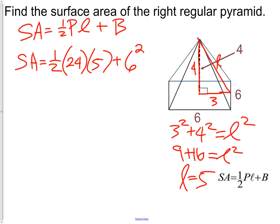Now we just got to calculate our numbers out. 1 half of 24 is 12. 12 times 5 is 60. 6 squared is 36. Our area, or surface area, of this shape is 96 units squared.